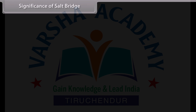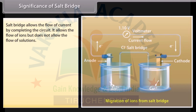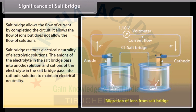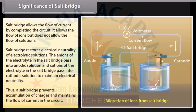Significance of salt bridge: The salt bridge allows the flow of current by completing the circuit. It allows the flow of ions but does not allow the flow of solutions. The salt bridge restores electrical neutrality of electrolytic solutions — anions of the electrolyte in the salt bridge pass into the anodic solution, and cations pass into the cathodic solution, to maintain electrical neutrality. Thus a salt bridge prevents accumulation of charges and maintains the flow of current in the circuit.